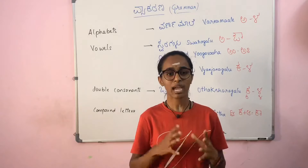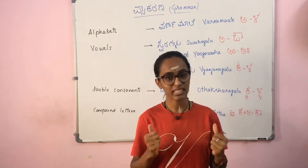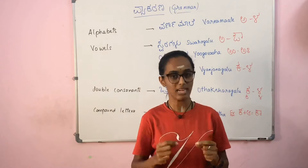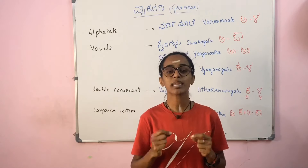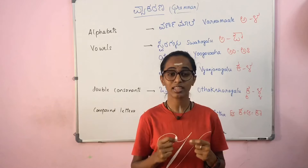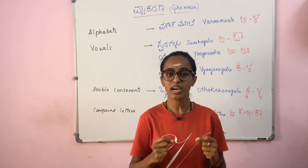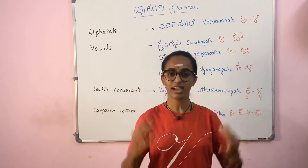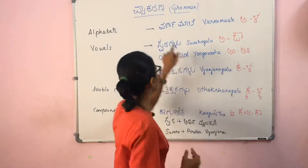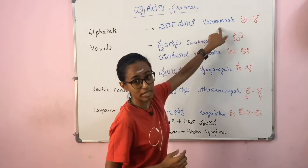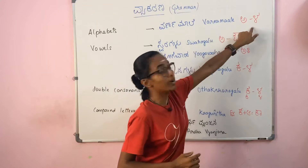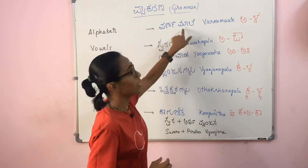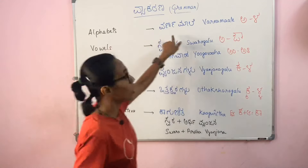Starting with the alphabets. A to Z — in Kannada this is called varna maale, that is a garland of letters. In English it is the same. From a to la, it's called varna maale — alphabets are called varna maale.